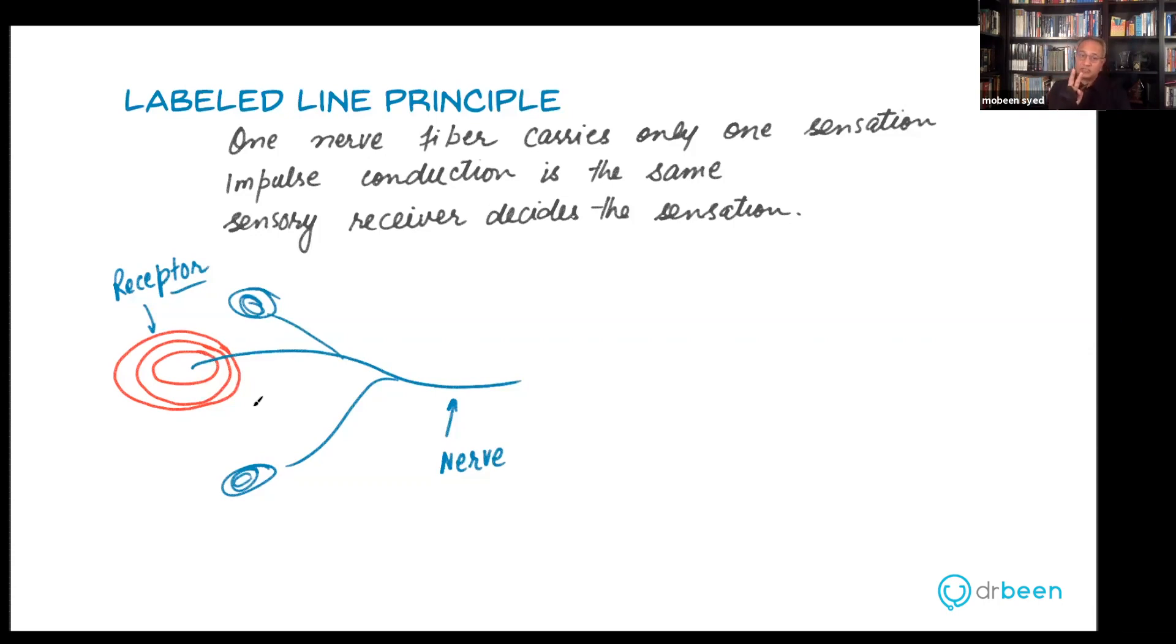So two very important concepts have come our way. One is: one type of receptor responds to one modality. If it is pressure, then it is going to respond to pressure. If it is temperature, the receptor then it is going to only respond to temperature. One kind of receptor only responds to one kind of modality.